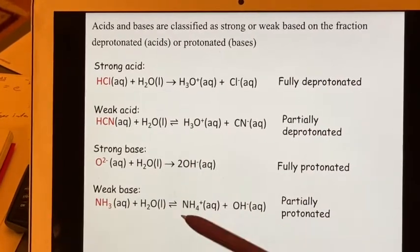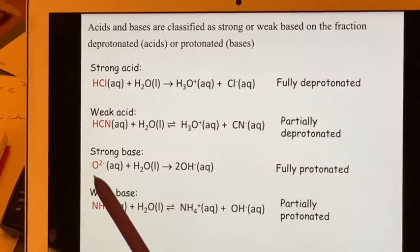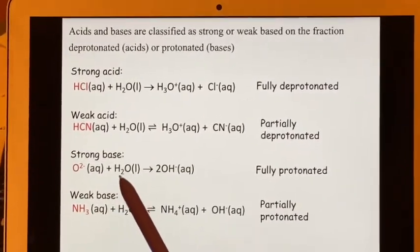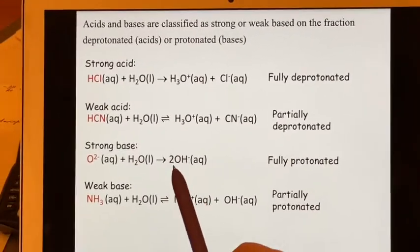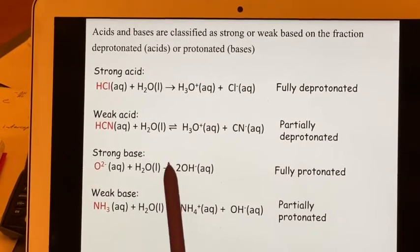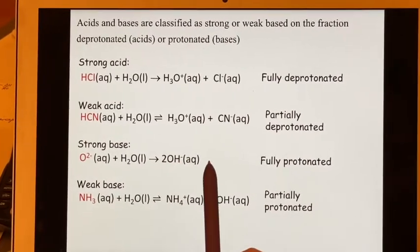And how does this look when you talk about bases? Well here is a strong base, an oxide ion. It will take one of the H's from the water to form OH minus. It will be fully protonated. It's going to do this one-way trip and you will just have OH minuses as a result.